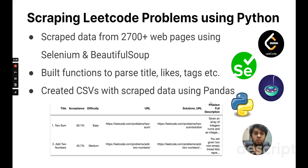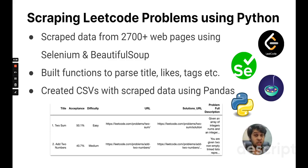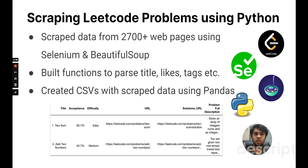I scraped LeetCode problems using Python, Selenium, and BeautifulSoup. I scraped over 2,700 pages and built different functions to scrape information from the HTML data. Then I saved all of that information into a CSV file. The final CSV file had around 2,700 rows and around 10 plus columns.